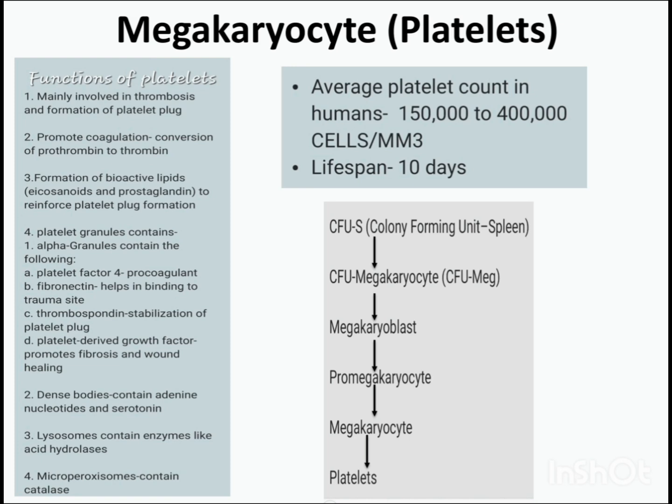Platelets are mainly involved in thrombosis and formation of the platelet plug. They promote coagulation, helping in conversion of prothrombin to thrombin. They also help in the formation of bioactive lipids such as eicosanoids and prostaglandins to reinforce platelet plug formation. Platelet alpha granules contain platelet factor 4 acting as a procoagulant, fibronectin for binding to thrombocytes, thrombospondin for stabilization of platelet plug, and platelet-derived growth factor promoting fibrosis and wound healing. Dense bodies contain adenine nucleotides and serotonin. Lysosomes contain acid hydrolases; microperoxisomes contain catalase.